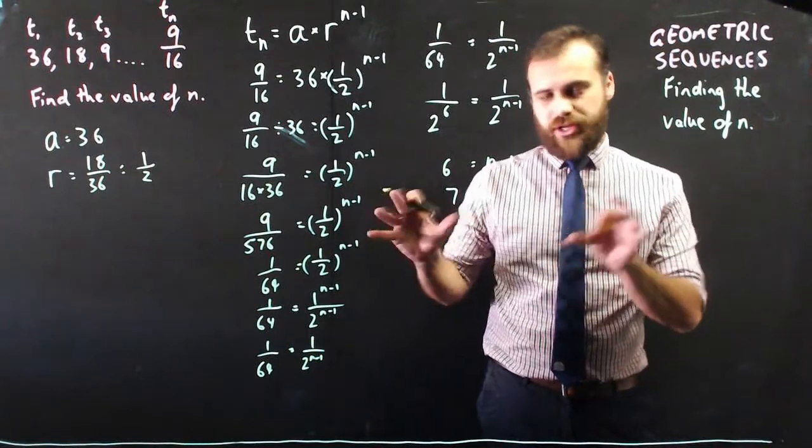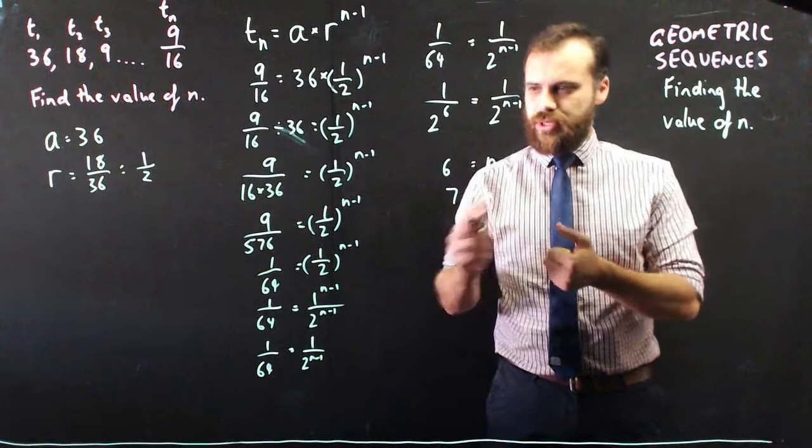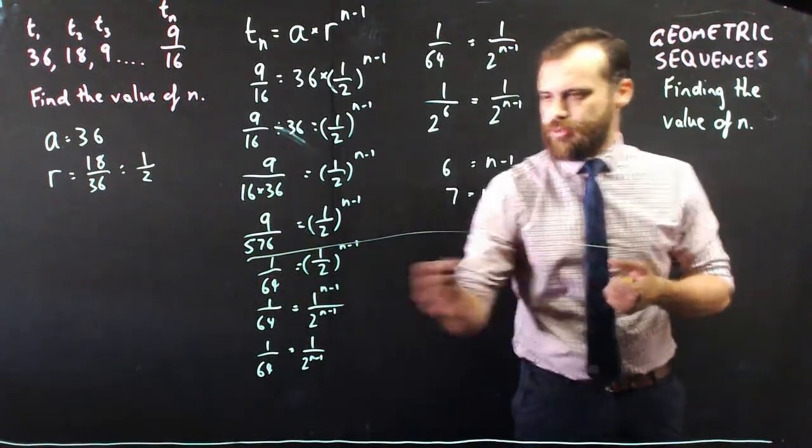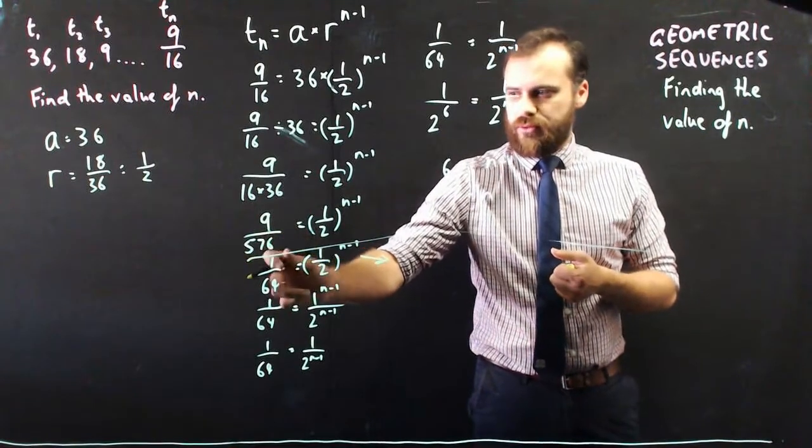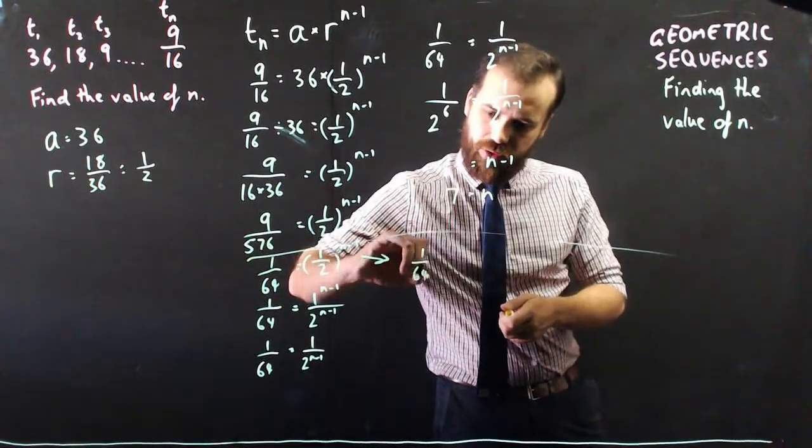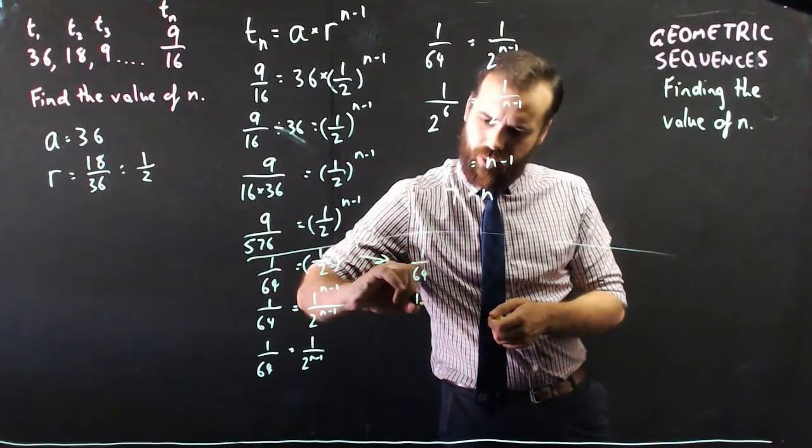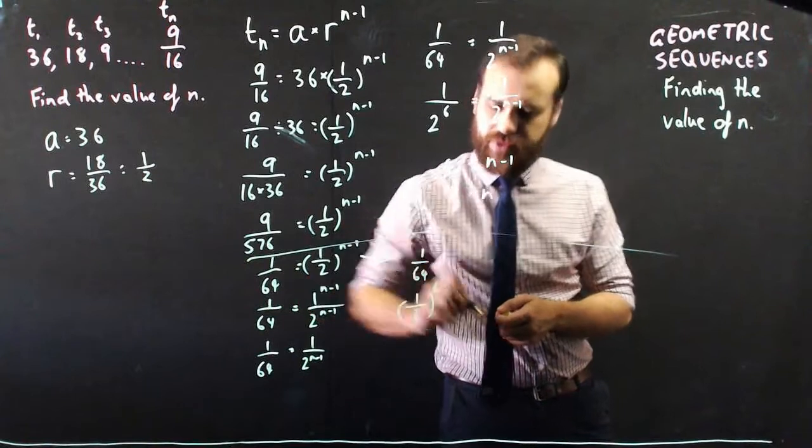Just before I go, there is an alternative path for solving this. It's probably not as intuitive, I think, but you could have done it this way. So if you look at 1 over 64, you could rewrite 1 over 64 as 1 over 2 to the power of 6.